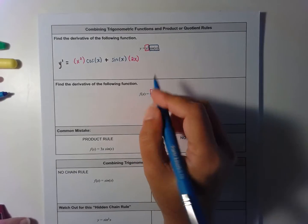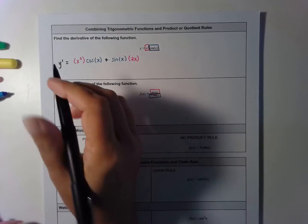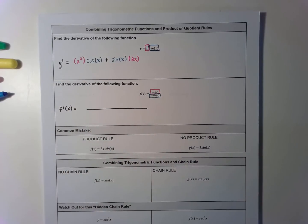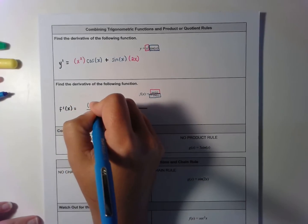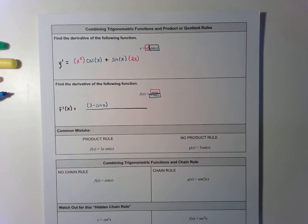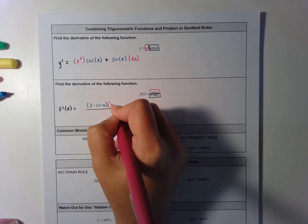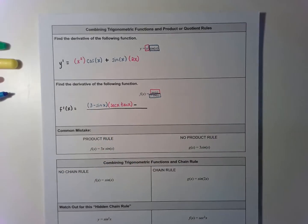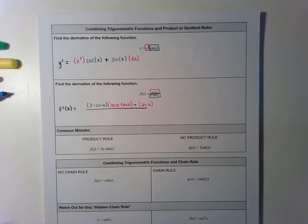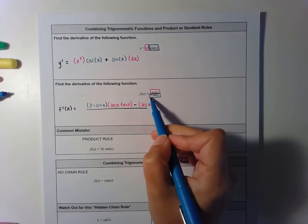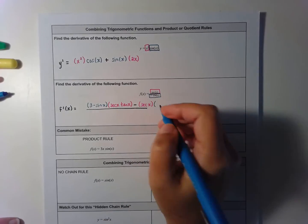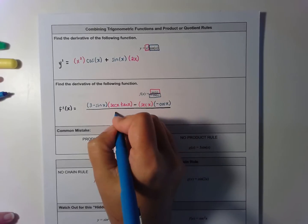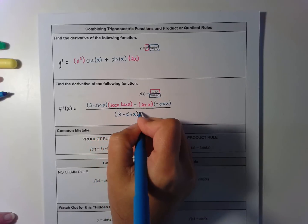We can also combine quotient rule with trig functions — for example, when we have a top and a bottom. To find the derivative I use quotient rule: low d high minus high d low, all over low squared. So I copy the low, which is 3 minus sine of x, times the derivative of secant, which is secant of x times tangent of x, minus the secant of x times the derivative of the bottom. The derivative of 3 is 0, and the derivative of negative sine is negative cosine. All over (3 minus sine of x) squared.